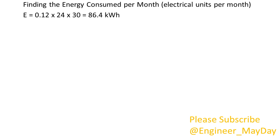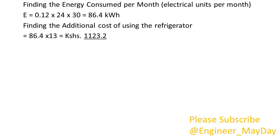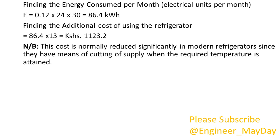Finding the energy consumed per month: E equals 86.4 kilowatt hours. Finding the additional cost of using the refrigerator, which equals 1,123.2 shillings. Note that this cost is normally reduced significantly in modern refrigerators since they have means of cutting off supply when the required temperature is attained.